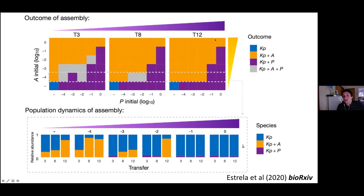What we find is that as a function of time this phase portrait converges: every community started in the orange region converges to an Alcaligenes-dominated state, and every community started in the purple region converges to a Pseudomonas-dominated state. For example, where Alcaligenes started at 10^-4 with no Pseudomonas, Alcaligenes dominates because it cannot be challenged. Where Pseudomonas was originally very low, it went away and Alcaligenes took over. And where Alcaligenes started low, it never invaded — Pseudomonas remained and the state became non-invasible for Alcaligenes.